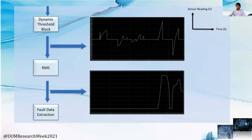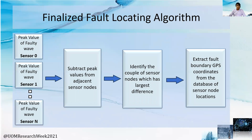It starts processing the incoming data to find its peak value, carried out for a given period of time which depends on the line protection device settings. This peak value is sent to the central server with the corresponding sensor ID. The fault locating algorithm is then executed using the peak values received from all sensors. It subtracts peak values from adjacent sensor nodes and identifies which adjacent sensor nodes have the highest variation in their peak values. These sensor nodes are determined as the boundaries of the fault, and the GPS coordinates of the fault boundaries are identified using a database of sensor IDs with their installed location data.